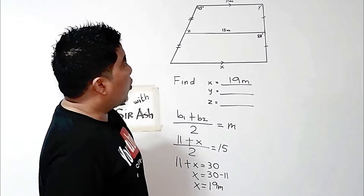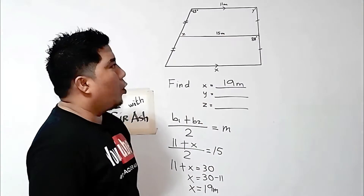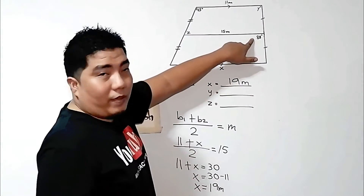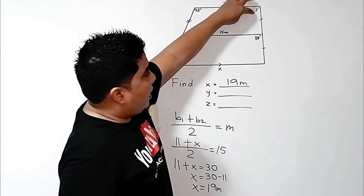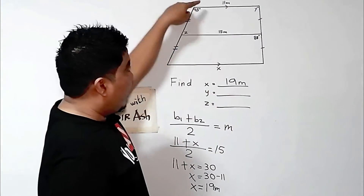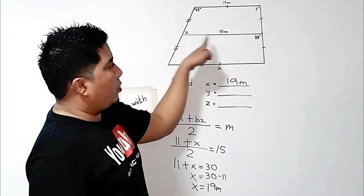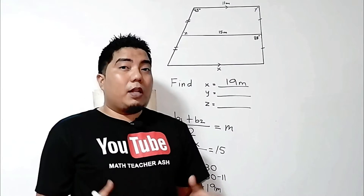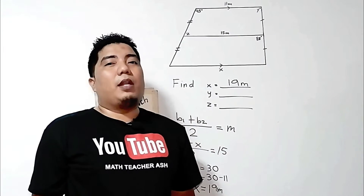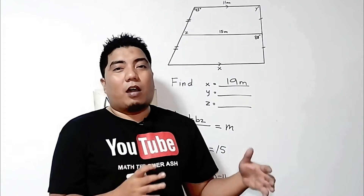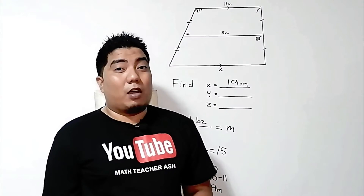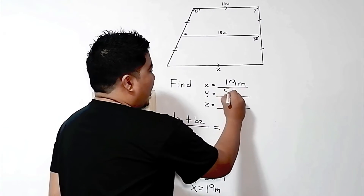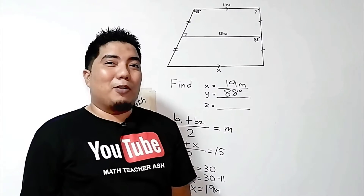Now let us go to our y variable. Our y variable here is a base angle. This would be very easy because this trapezoid and the bigger trapezoid are basically similar. If the figures are similar, the sides are proportional but the angles are congruent. So therefore, if this is 88 degrees, then this is also 88 degrees. And you have answered your y variable. Easy, right?